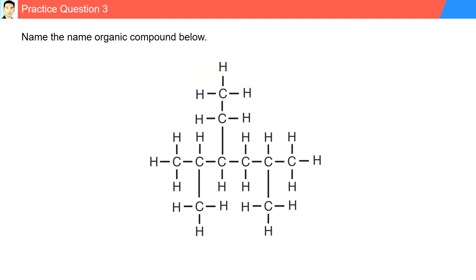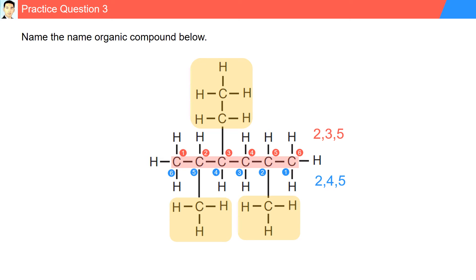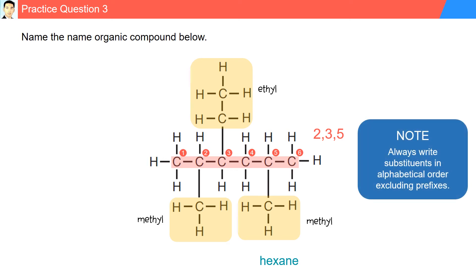Practice question three. Name the organic compound below. Step one is to identify the longest carbon chain — here we have a six carbon chain. We number from left to right or from right to left. We identify our branches and choose the numbering that gives the lowest possible numbers. We have two options: two, three and five, or two, four and five. We'll pick from left to right: two, three and five. Our branches are a methyl, another methyl, and an ethyl group. The longest chain has six carbons, so we call it hexane. We must write ethyl before methyl alphabetically, even though there are two methyl groups. The dimethyl groups are located at carbons two and five, and the ethyl group is at carbon three. Our name is 3-ethyl-2,5-dimethylhexane.